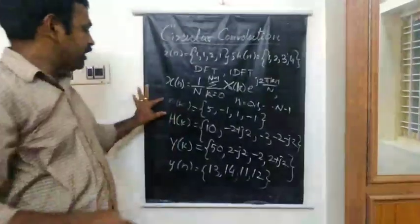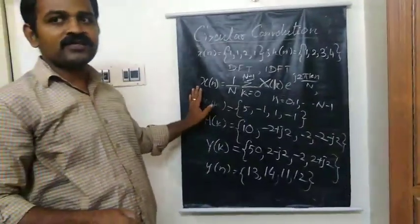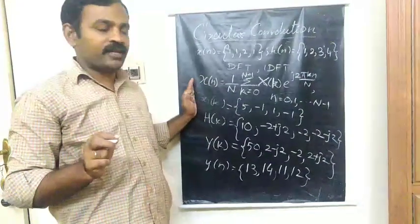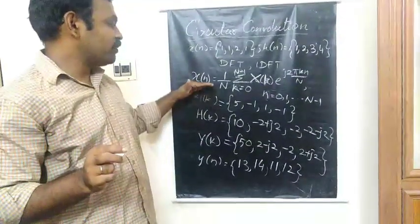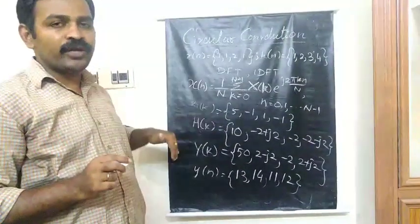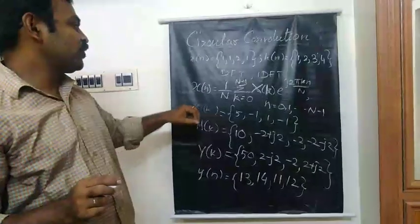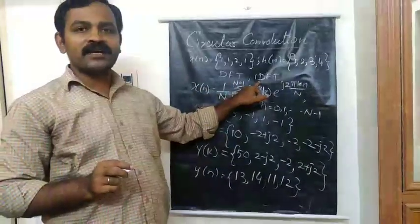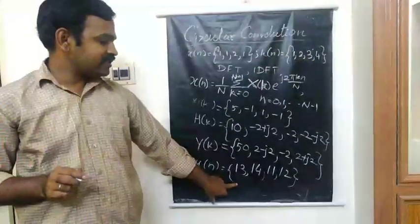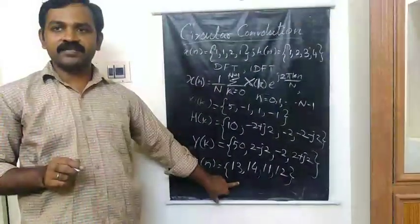The procedure: first, given sequences, we are going to apply the Forward Discrete Fourier Transform and find both X of k and H of k. Then you multiply both because convolution in time domain equals multiplication in frequency domain. To get Y of k, you multiply X of k and H of k. Then you apply Inverse Discrete Fourier Transform to Y of k, and you get the answer.